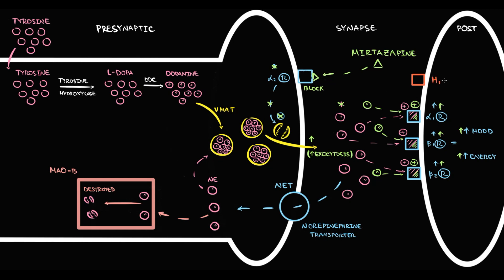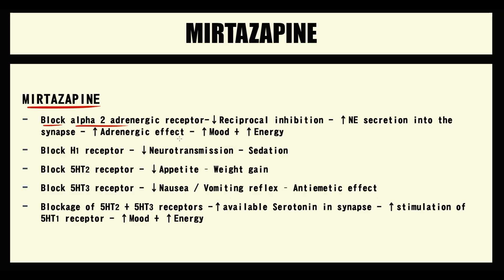Also on the postsynaptic neuron we have histamine type 1 receptors. These receptors in the CNS provide neurotransmission. Mirtazapine also blocks H1 receptors, and with blockage of H1 receptors, the speed of neurotransmission decreases, causing sedation. So to summarize: mirtazapine blocks alpha-2 receptors, causing decreased reciprocal inhibition, which increases exocytosis of norepinephrine into the synapse. With increasing norepinephrine, the adrenergic effect increases, mood becomes better, and energy increases. Mirtazapine also blocks H1 receptors, decreasing the rate of neurotransmission, which manifests as sedation.